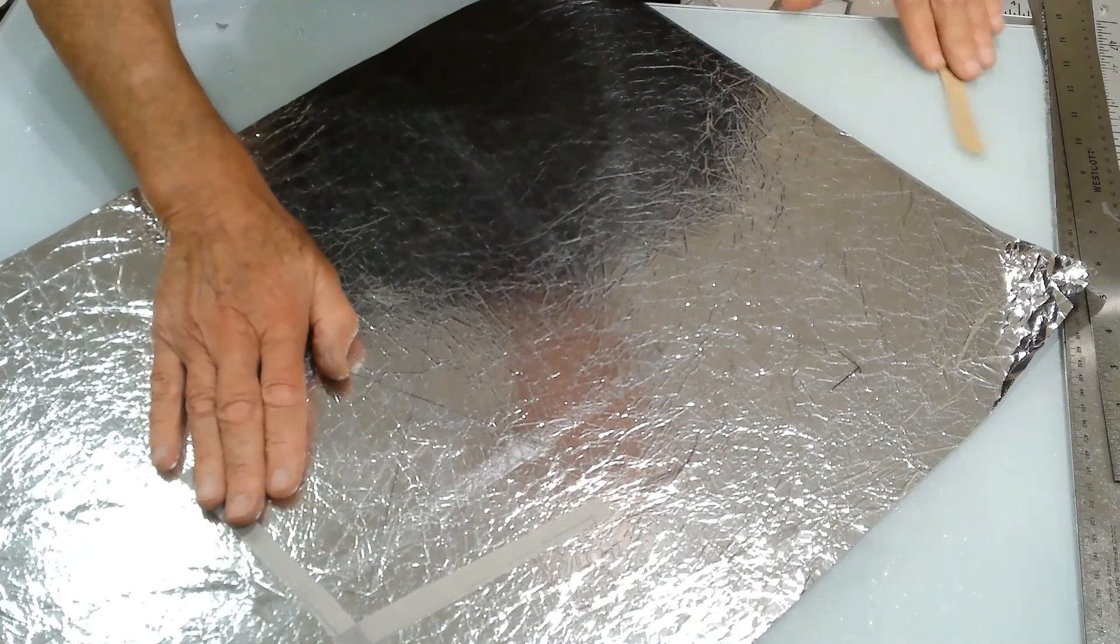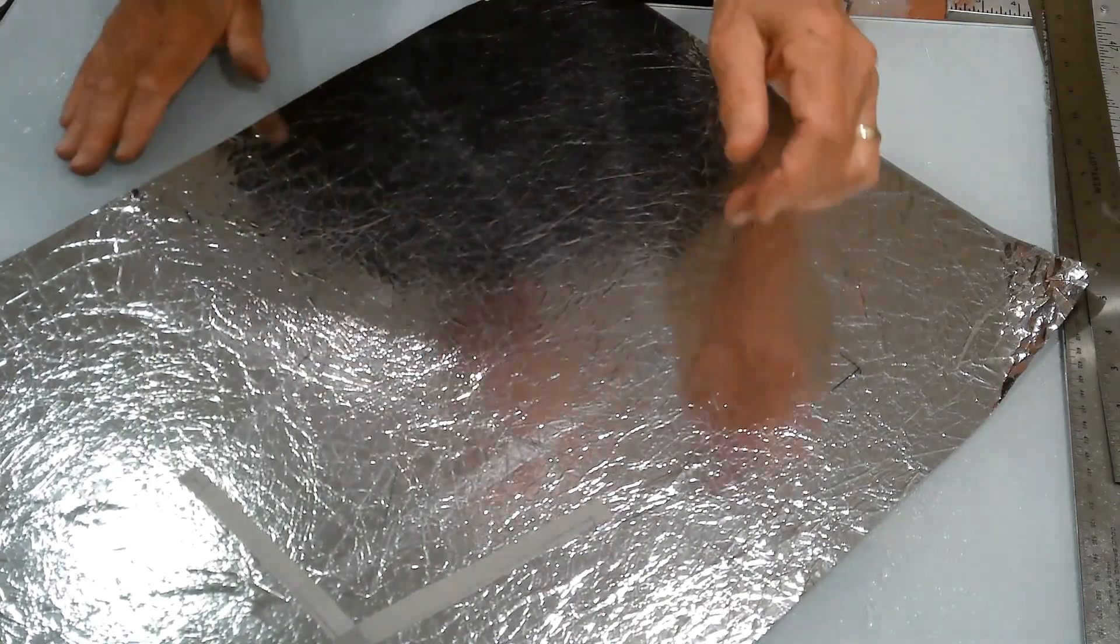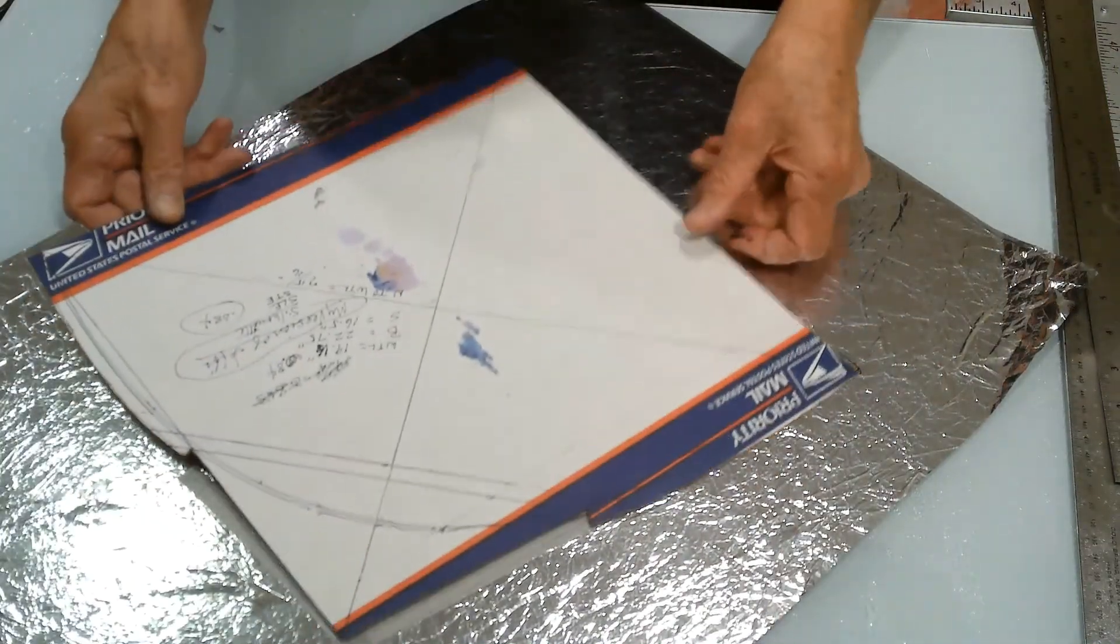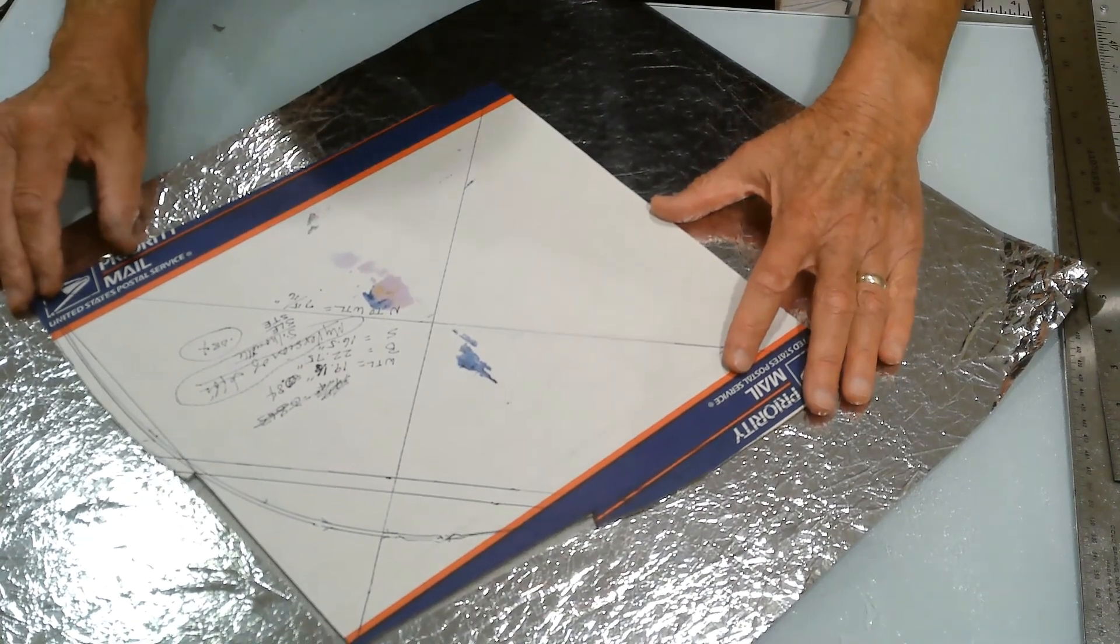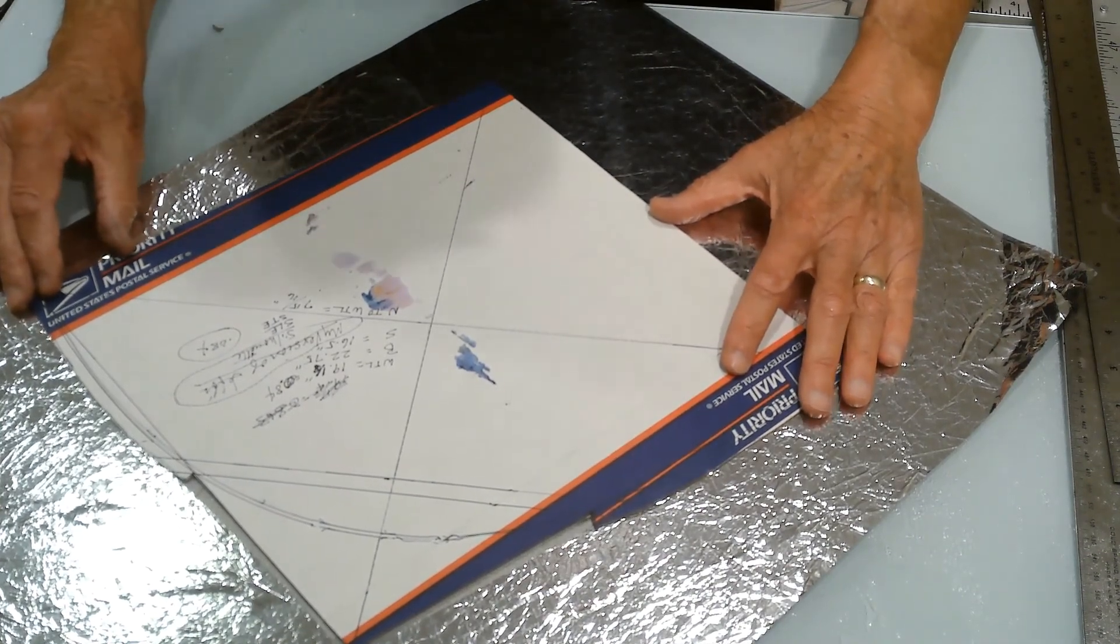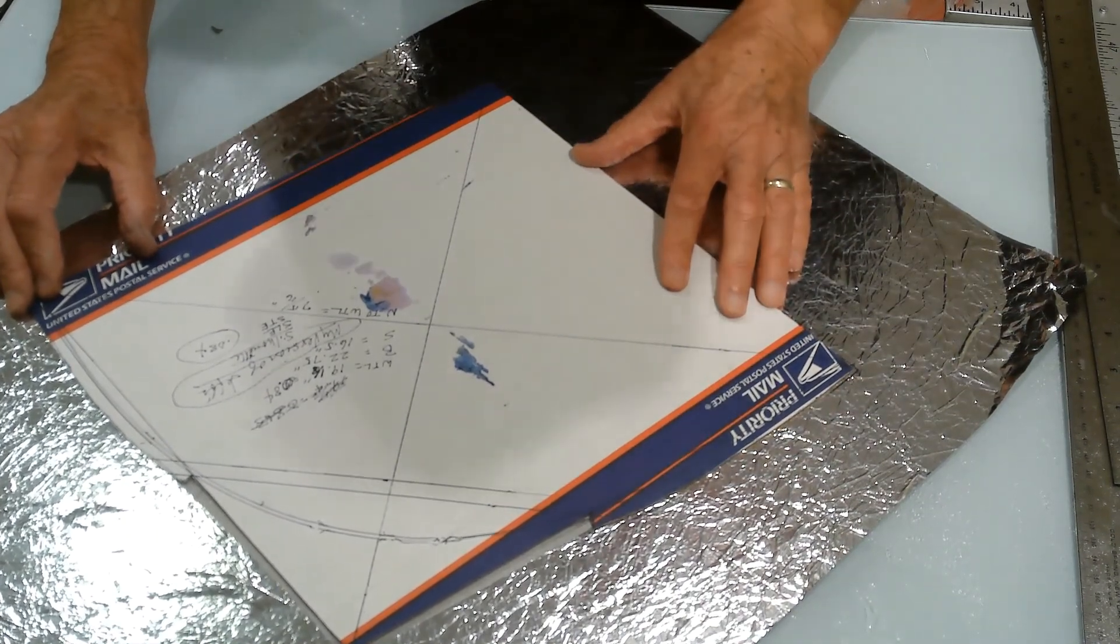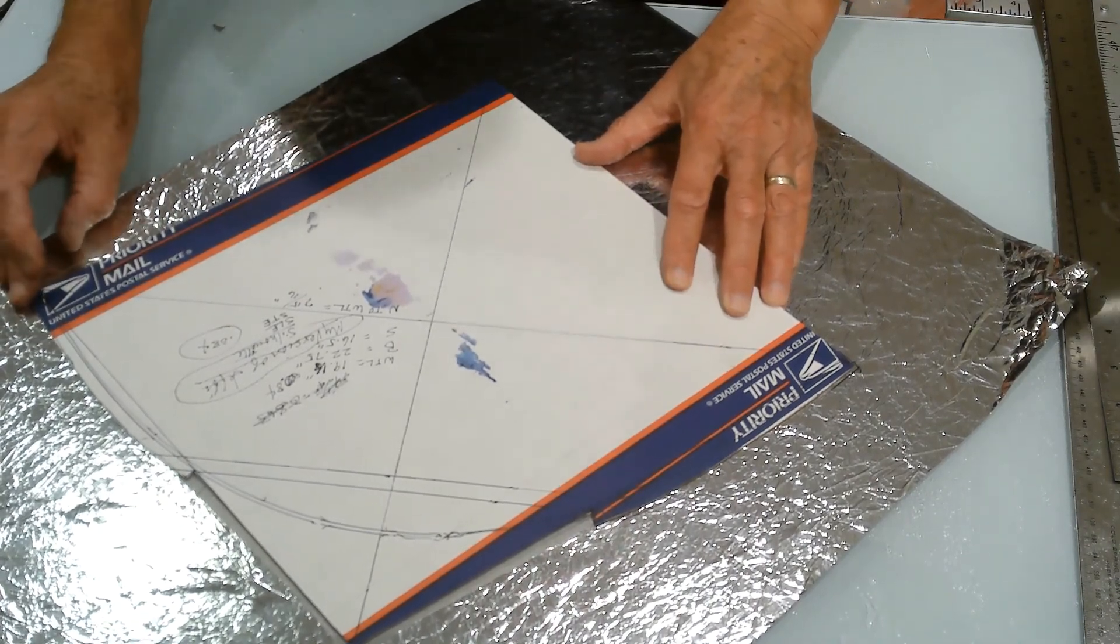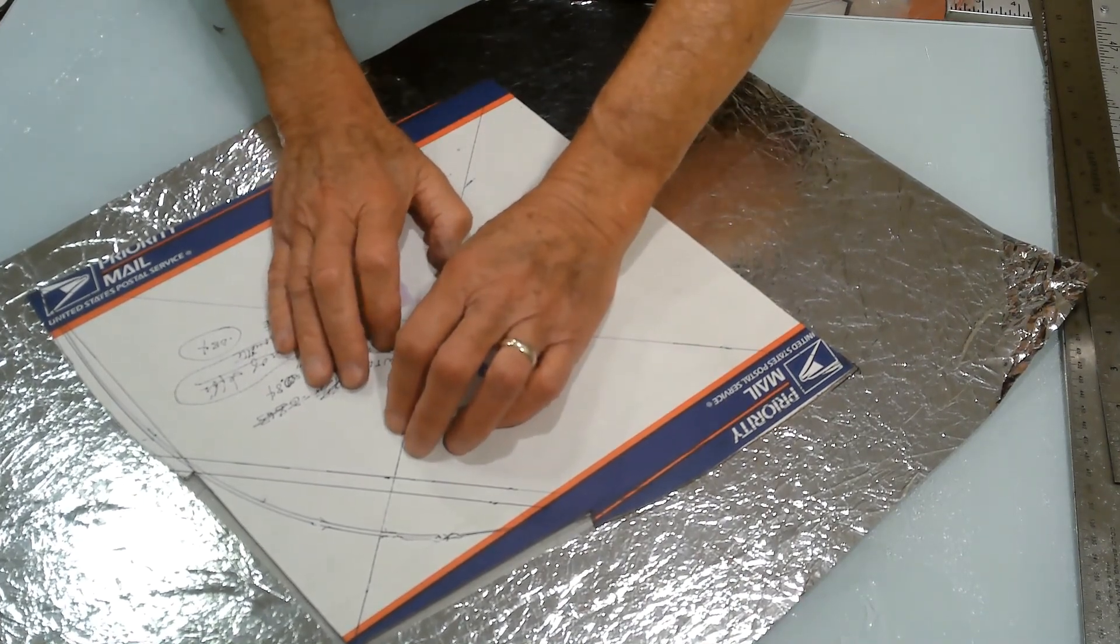Okay, now what I have to do is put my kite pattern back onto the sail material, so it's positioned where it originally was, and then I cut it out.